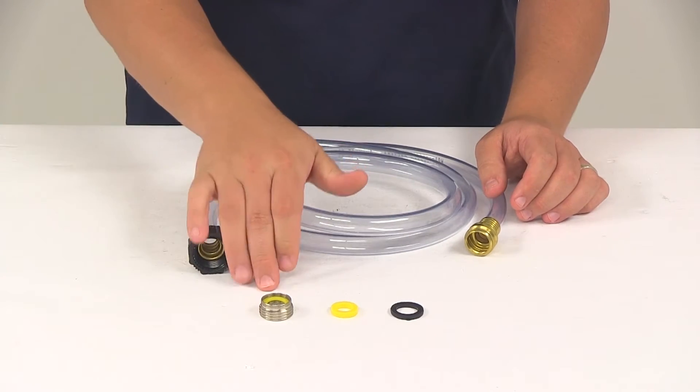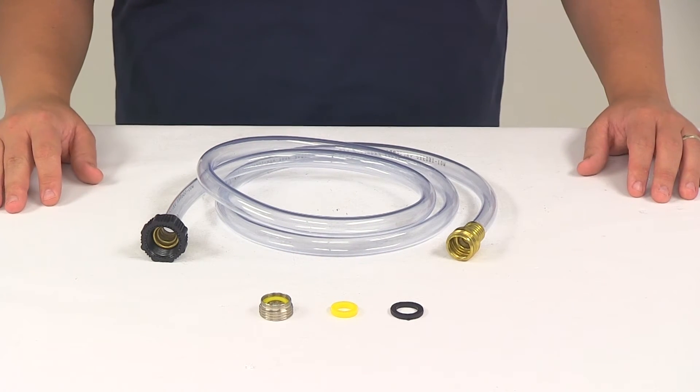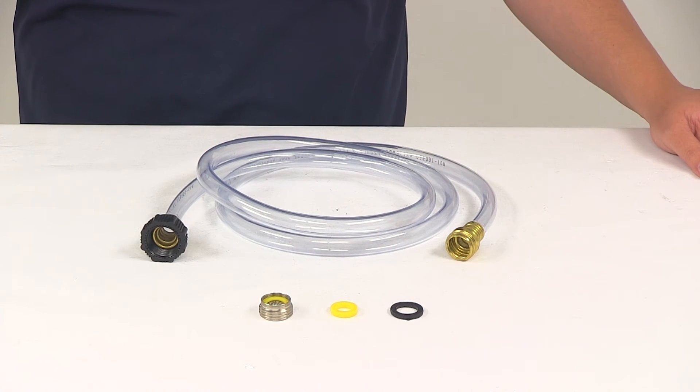Again, clear hose and the big thing is that it does come with that universal faucet to hose adapter. That's going to do it for today's look at the Valterra Tank Wand Hose Kit for RVs.